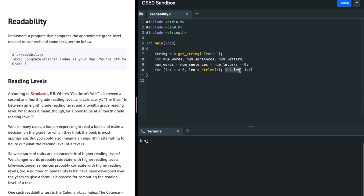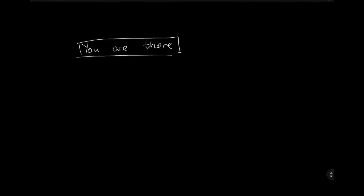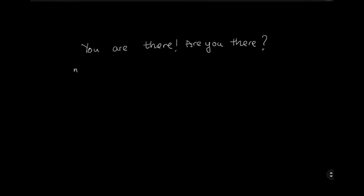Now, how do we calculate the number of letters, words, and sentences? Let's say you've entered the text 'Are you there?' - a bunch of sentences. The number of sentences is going to be equal to the number of exclamation marks, the number of full stops, and the number of question marks. That's the definition according to the problem set.